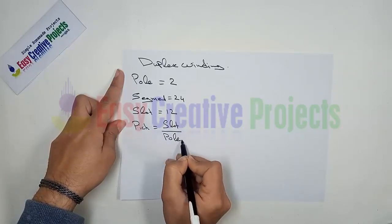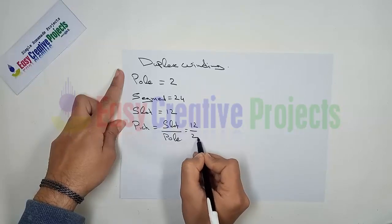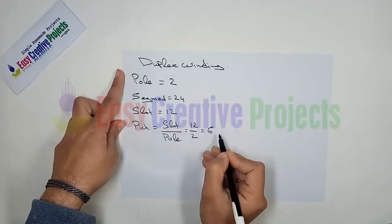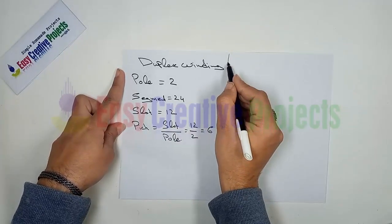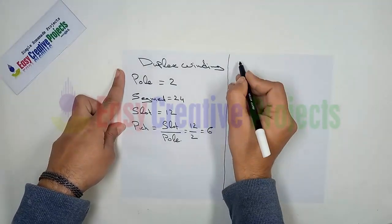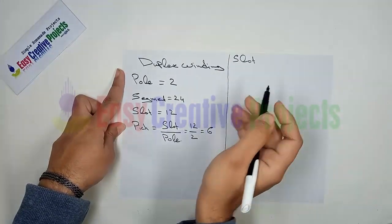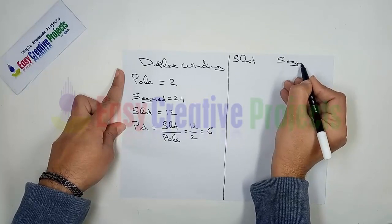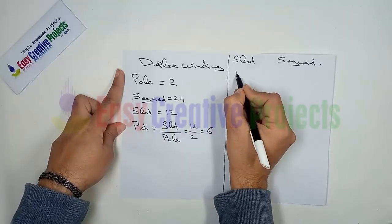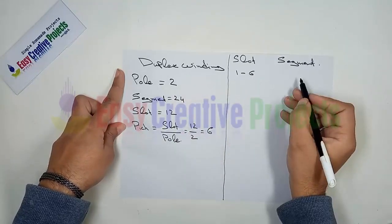equal to slot over pole. The answer is 6, meaning we wind in slot 1 and slot 6 ratio. For more simplification, we make a combination of slot and segment points like this.